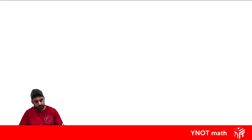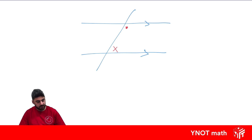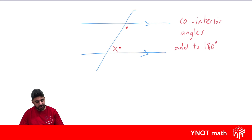Let's look at our last special property with parallel lines and transversals — two more parallel lines and a transversal. These two angles are not going to be equal, but they're always going to add up to 180 degrees. These ones are called co-interior angles. Co-interior angles are not equal, but they add to 180 degrees. They're both inside the parallel lines and on the same side of the transversal.